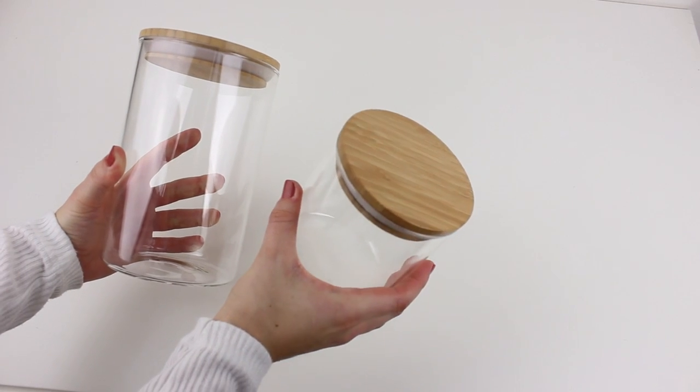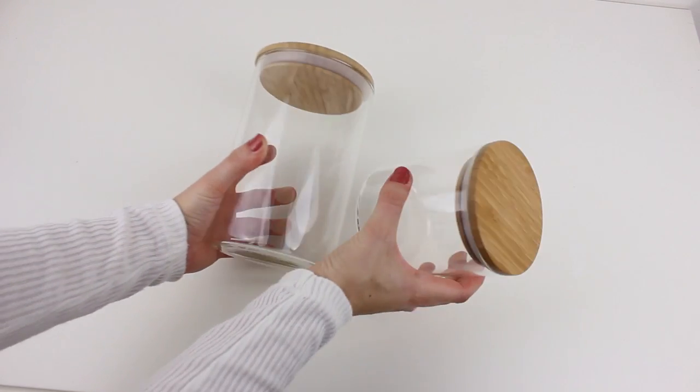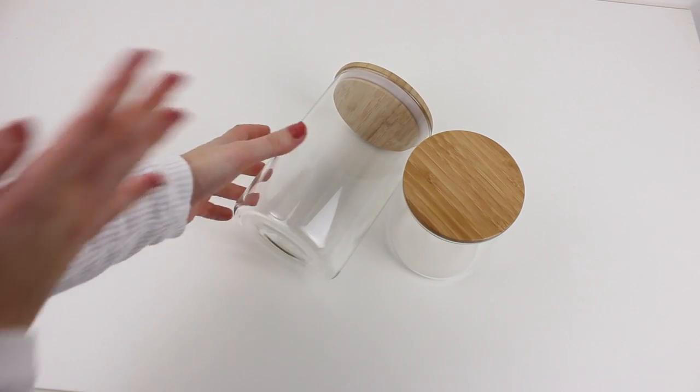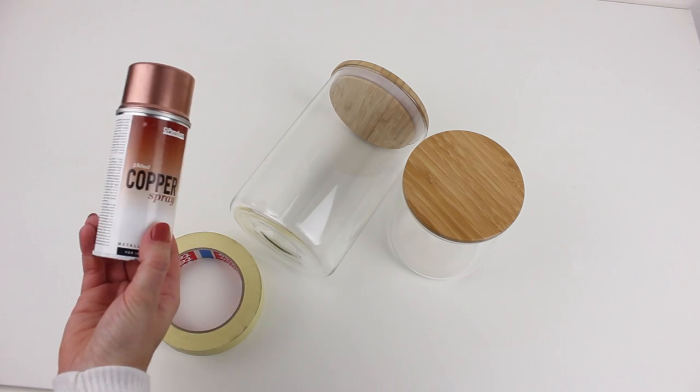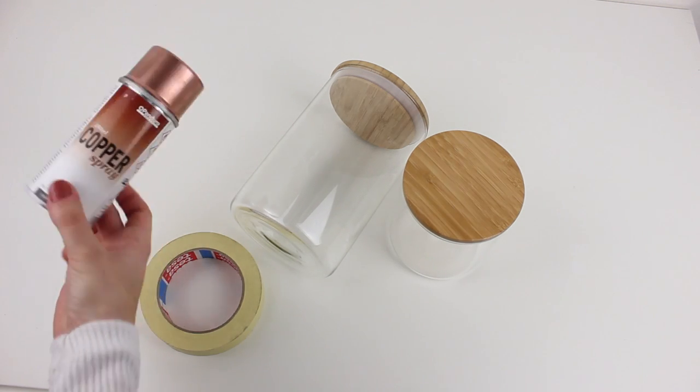So first of all, you will need two glass jars, one a bit taller than the other. You will also need paper tape and a metallic spray paint. I am using this copper one.